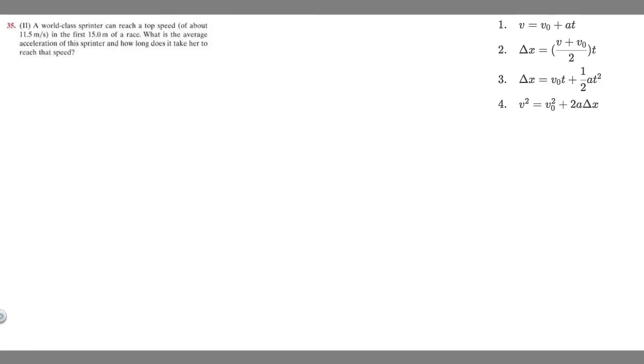In this problem we're told a world-class sprinter can reach a top speed of about 11.5 meters per second in the first 15 meters of a race. What is the average acceleration of the sprinter and how long does it take her to reach that speed?